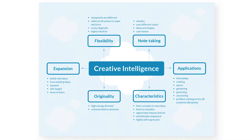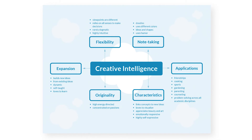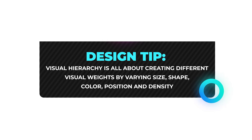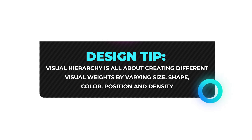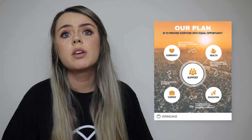This idea map template makes use of a cloud motif, possibly to signify lofty thoughts. It's a simple design but can be easily edited to define any concept. Design tip: visual hierarchy is all about creating different visual weights by varying sizes, shapes, colors, positions, and densities. You can also use photography to support a theme, like how a sunrise in a template signals hope.